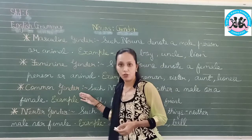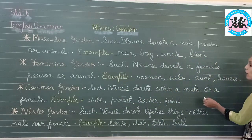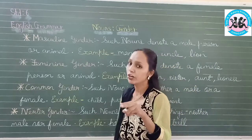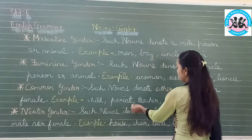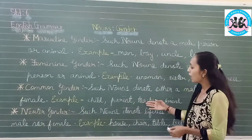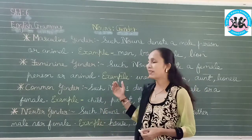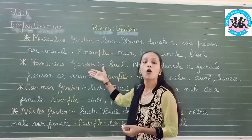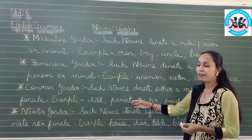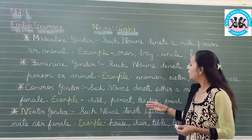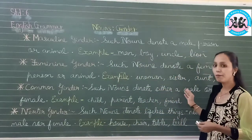Then we come to common gender. From the word 'common' itself, you can understand. Such nouns denote either a male or female — that means it is a word or noun which is common for both male and female. Examples: child, parent, teacher, friend. All these nouns are commonly used. A child means either a male child or female child. But if you say only 'child', it can be used as a common gender. Parent can be either mother or father. These nouns can be used for either a male or a female.